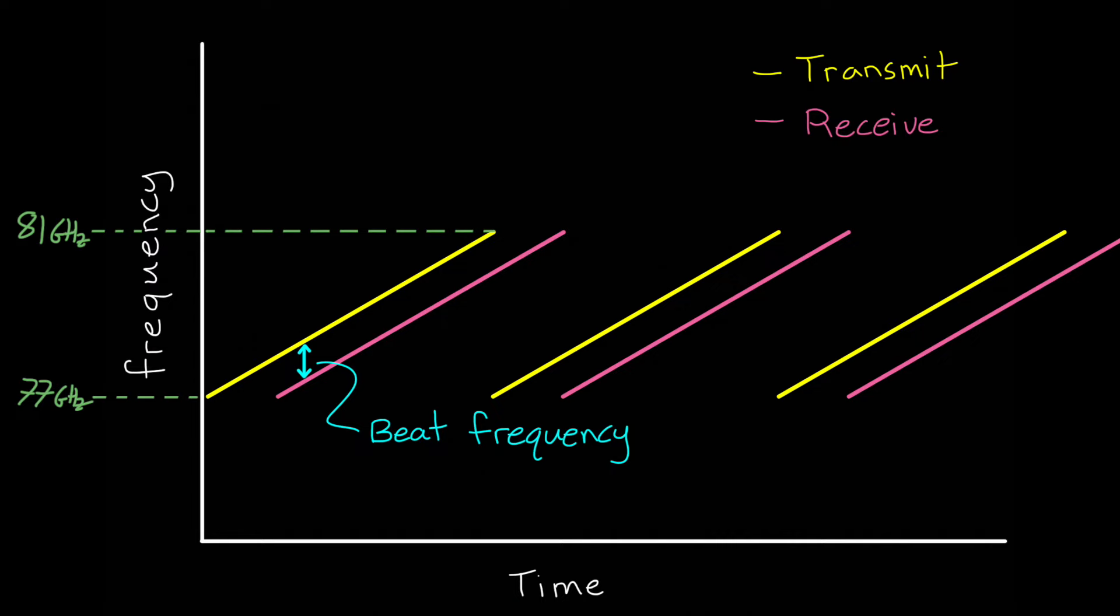So we are able to determine range in a very similar way as we do velocity by mixing the transmit and receive signals and measuring the beat frequency. Unfortunately, with this setup, we have a slight problem that we need to address. The problem is we can't determine whether this beat frequency is caused by a time shift like we see here, or by a Doppler shift.